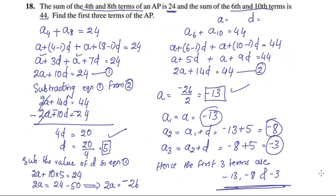This is very simple. If you have two conditions, you set up two equations and solve the AP problem.